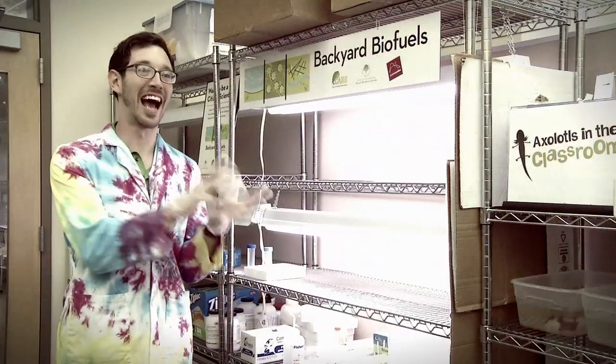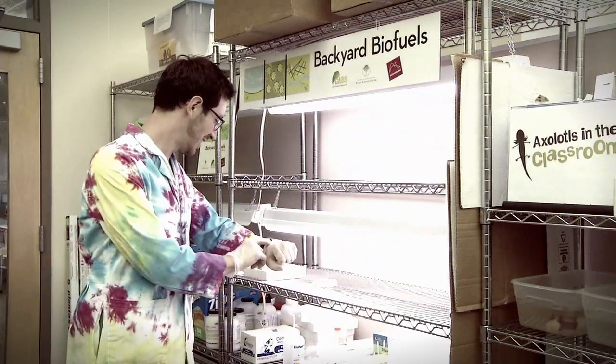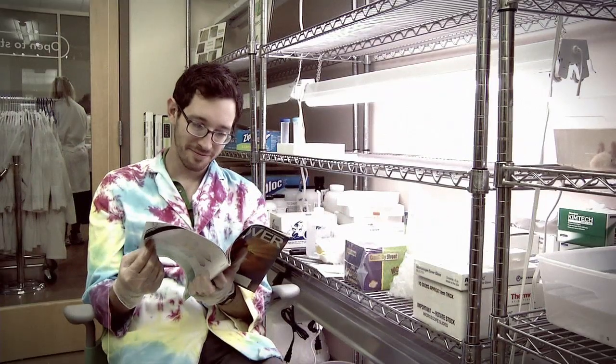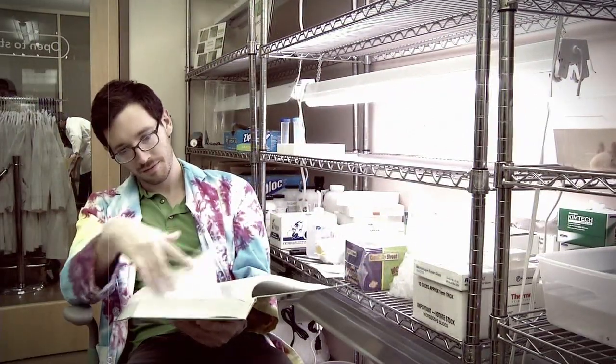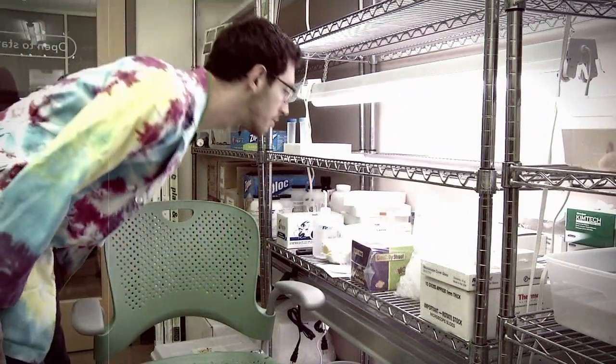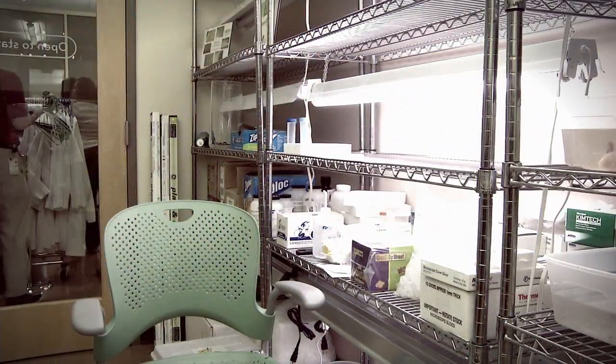Your algae will spend the next few days living under a grow lamp while they populate. Now comes a bit of waiting. This grow lamp mimics sunlight by giving off the correct wavelength for photosynthesis to take place. Since these algae need to make their own food from the sun, they would starve if they did not have a special light like this.